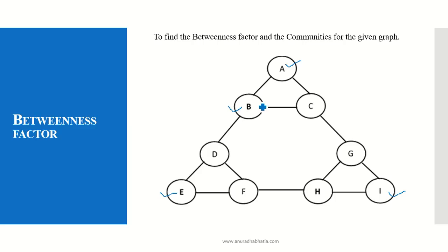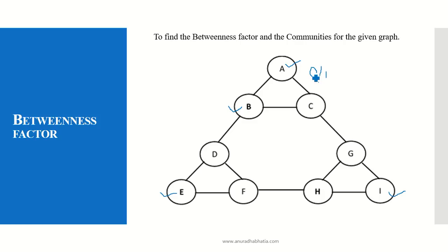The shortest path to reach C is A to C directly. B does not come into the picture, but there is a path existing when going A, B, C. So to reach from A to C, the value is 0 divided by 1. The numerator is 0 because A to C, the shortest path is direct — there is no path where B is coming in between that is a shortest path. There is one path existing where we can reach from A to C without B, so 0 divided by 1 equals 0.